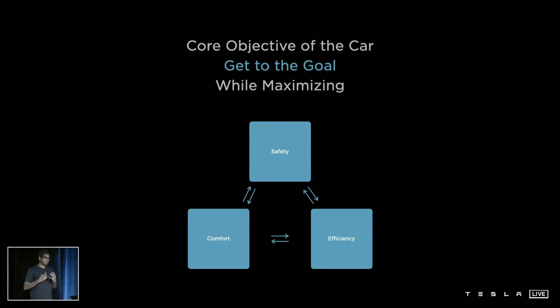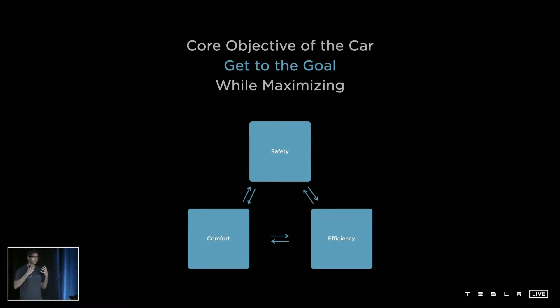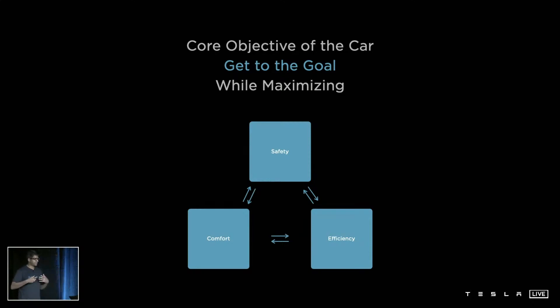Like Andre mentioned, the vision networks take dense video data and then compress it down into a 3D vector space. The role of the planner is to consume this vector space and get the car to the destination while maximizing the safety, comfort, and efficiency of the car.